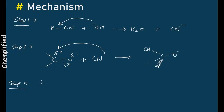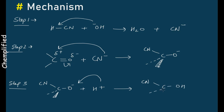In step 3, the H+ ion comes back and attacks the oxygen atom. The O negative plus H+ gives you the final product — cyanohydrin. This is the three-step mechanism for the formation of cyanohydrin using an aldehyde or ketone group. These are the two reactions discussed today. Thank you very much for watching.